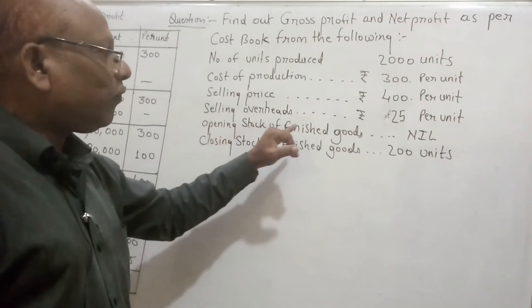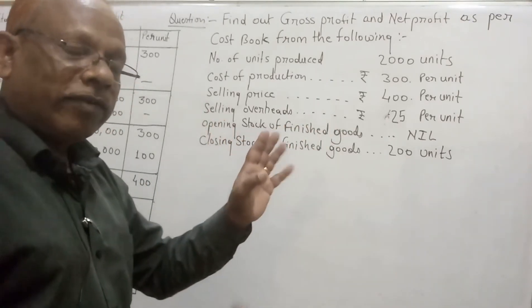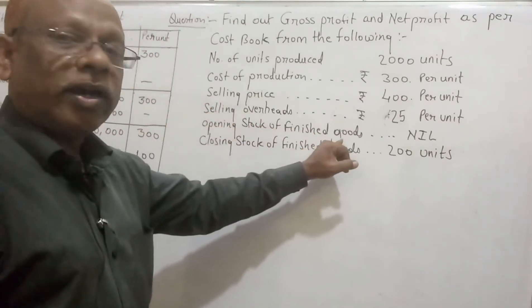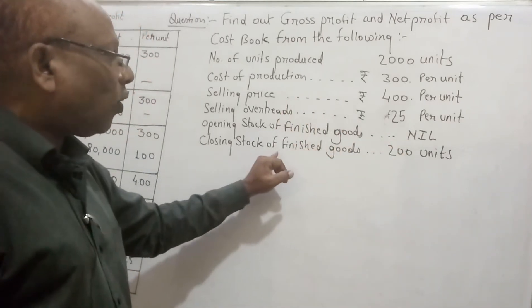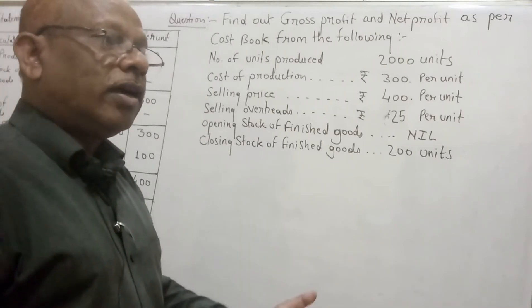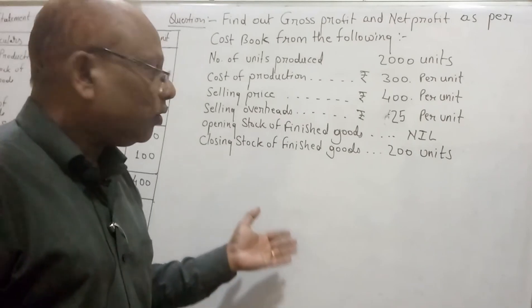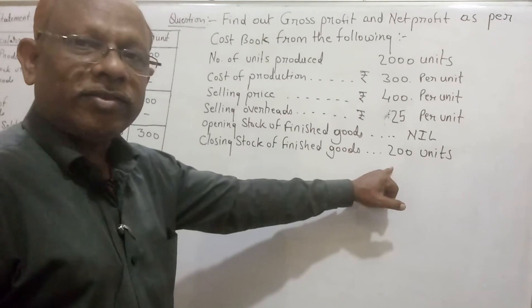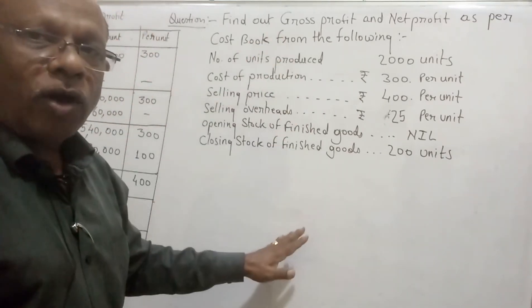Selling overheads or selling expenses are 25 rupees per unit. The opening stock of finished goods is nil — there is no previous closing stock. The closing stock of finished goods is given in units, that is 200 units. From this information we will solve the problem.